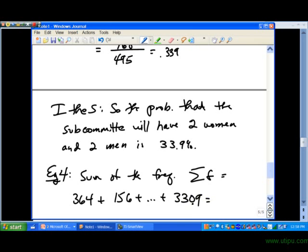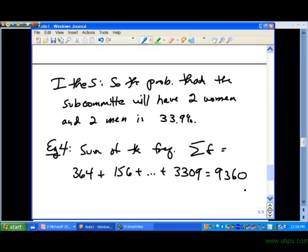3,309. I went ahead and added those up and got 9,360. So we can go ahead and answer part A now. Now, the probability that the periodical chosen was a quarterly.